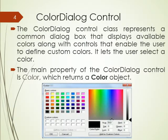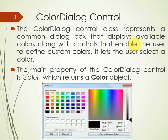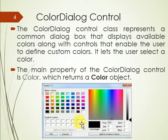The Color Dialog control class represents a common dialog box that displays available colors along with controls that enable the user to define custom colors. It lets the user select a color. The main property of the Color Dialog control is Color, which returns a color object. You can see the diagram of the Color Dialog control.